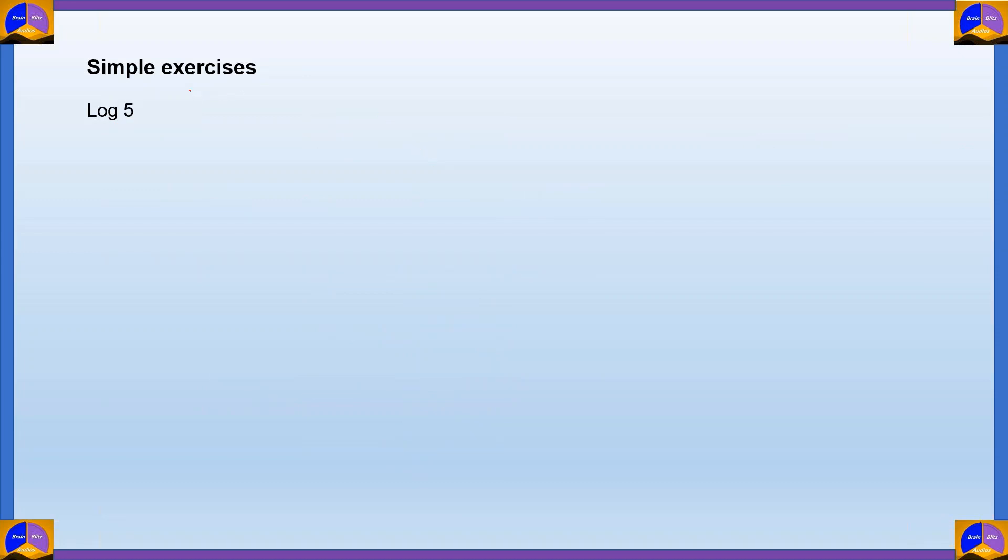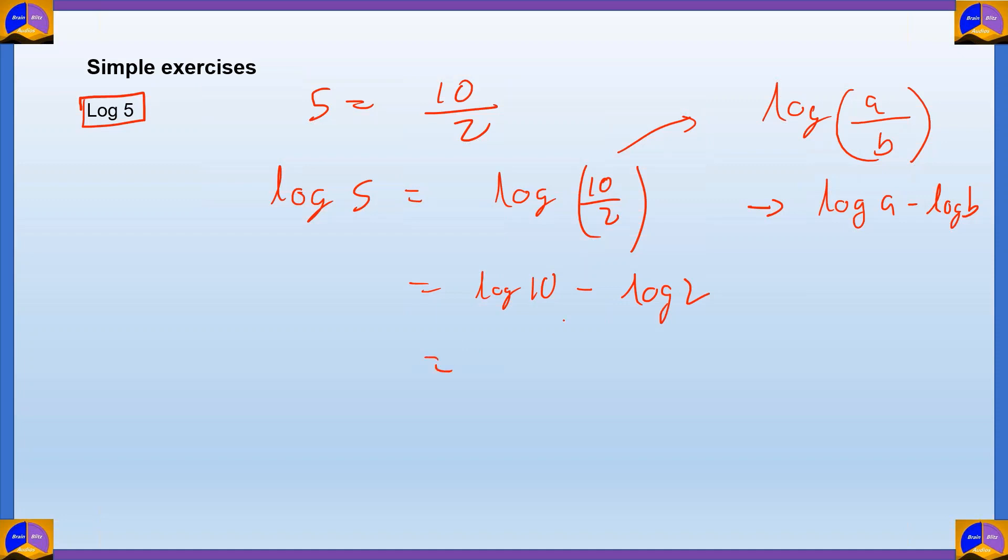Now, let's look at log 5. How do you solve log 5? In most of the other methods, they'll ask you to memorize the value of log 5, log 7, log 11, log 13, etc. So they'll ask you to memorize the primes so that you can work out with the composites. But over here, you don't need to. What you can do is you can write 5 as 10 by 2, which is true, right?